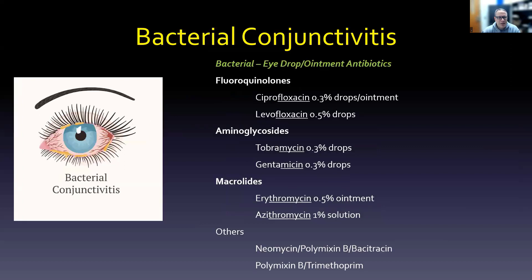When we talk about bacterial conjunctivitis, you're going to get some discharge, and you'll have eye drops and ointments available. You can use the fluoroquinolones — again, that's the floxacin stem: ciprofloxacin, levofloxacin. Aminoglycosides: tobramycin, gentamicin. The macrolides: erythromycin and azithromycin. Be careful with that mycin stem — a lot of drugs end in mycin; it just means the Streptomyces bacteria was used to make the antibacterial. And then others like neomycin, polymyxin B and bacitracin, or polymyxin B and trimethoprim. Lots and lots of options when it comes to bacterial conjunctivitis.